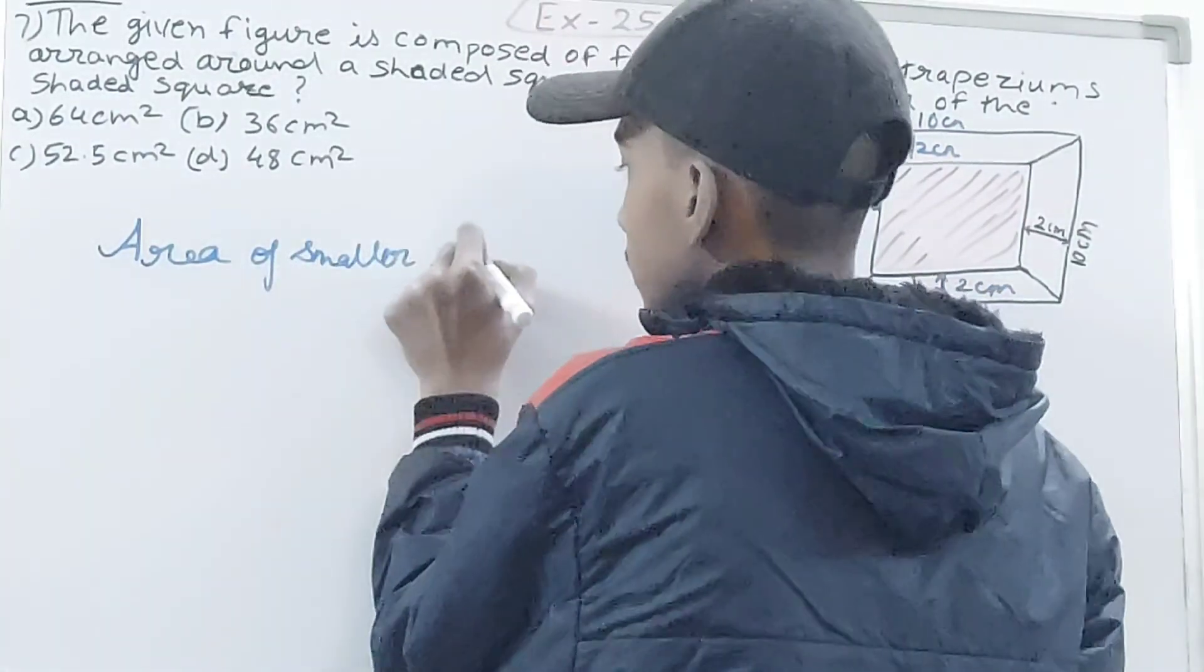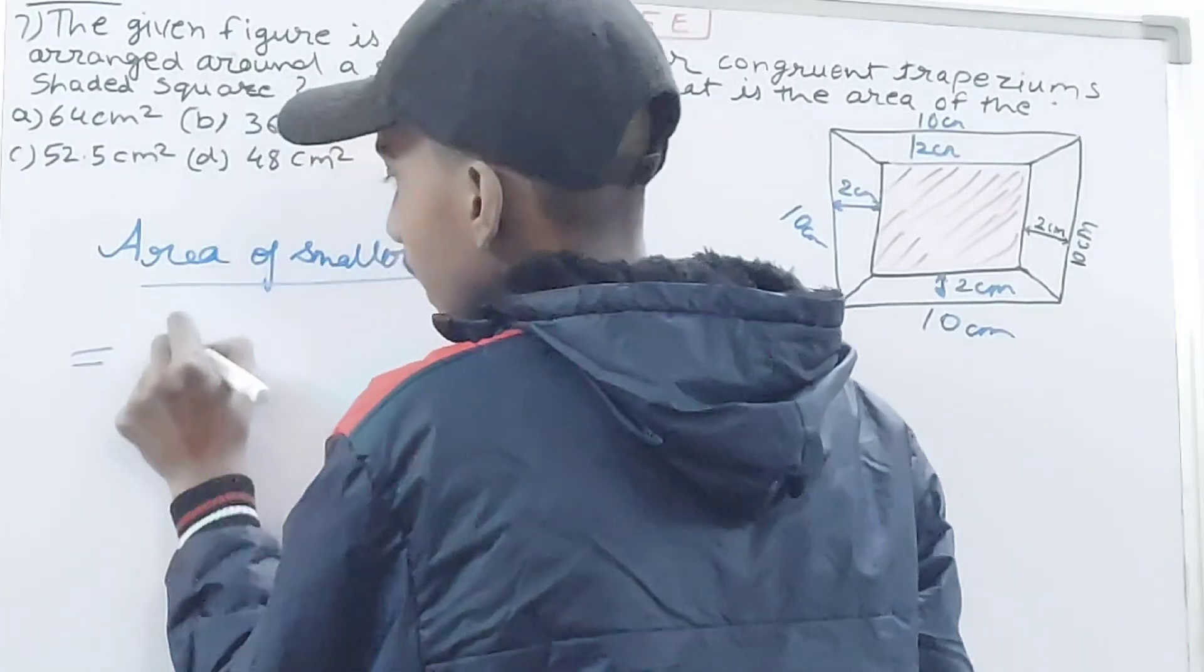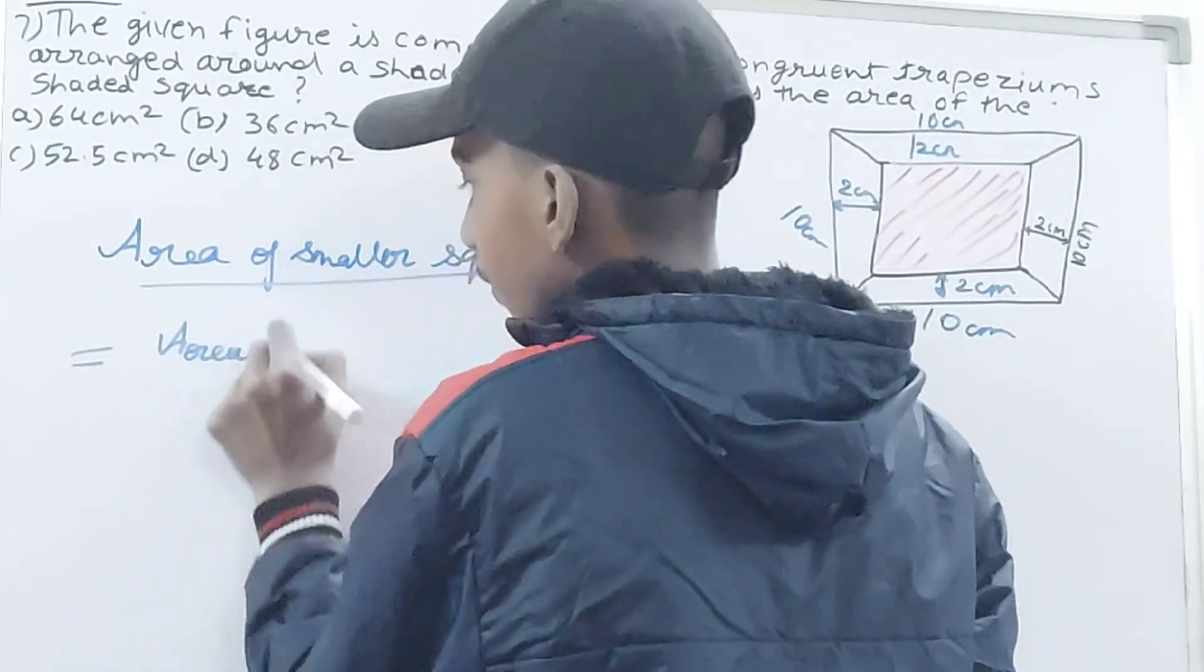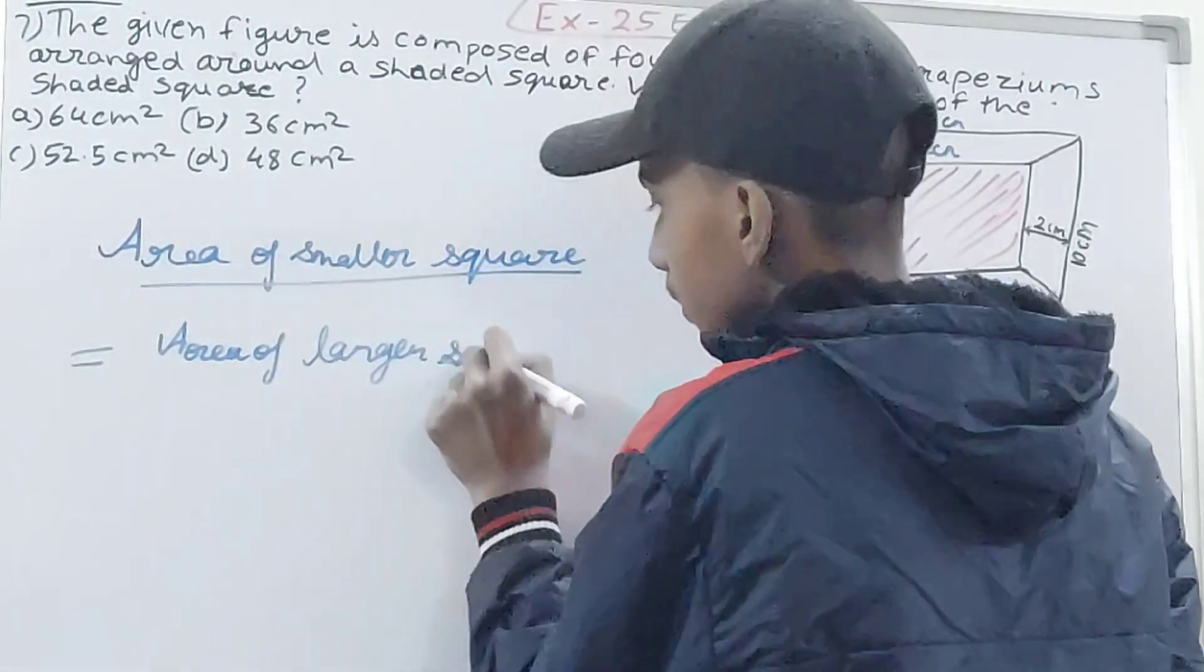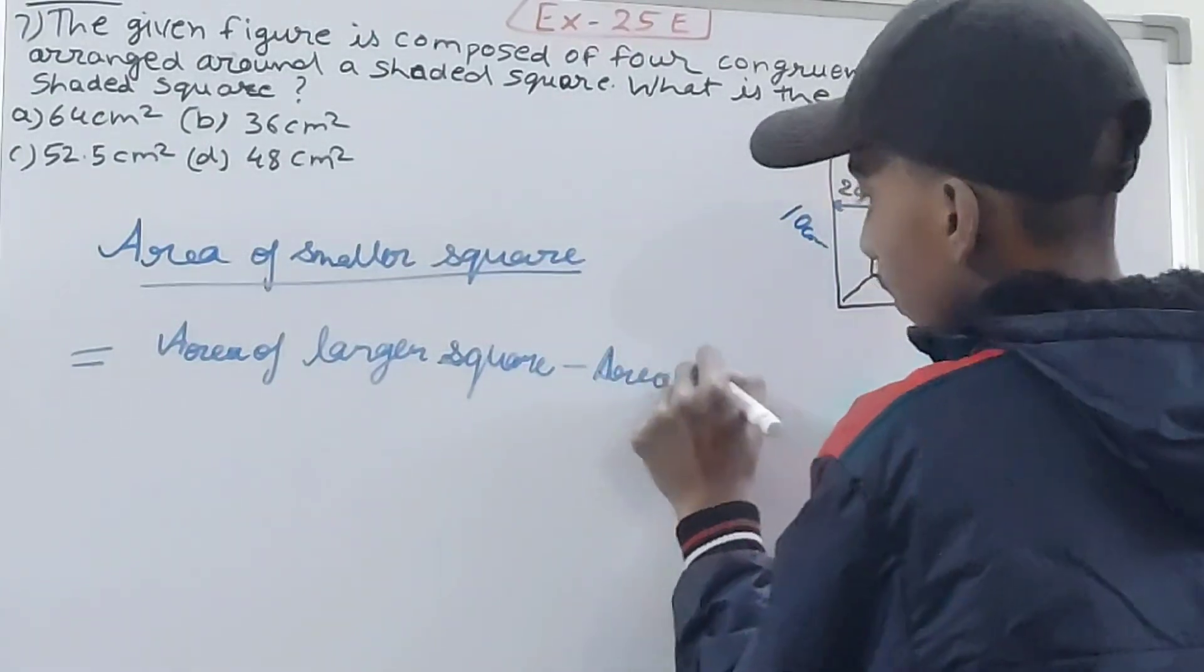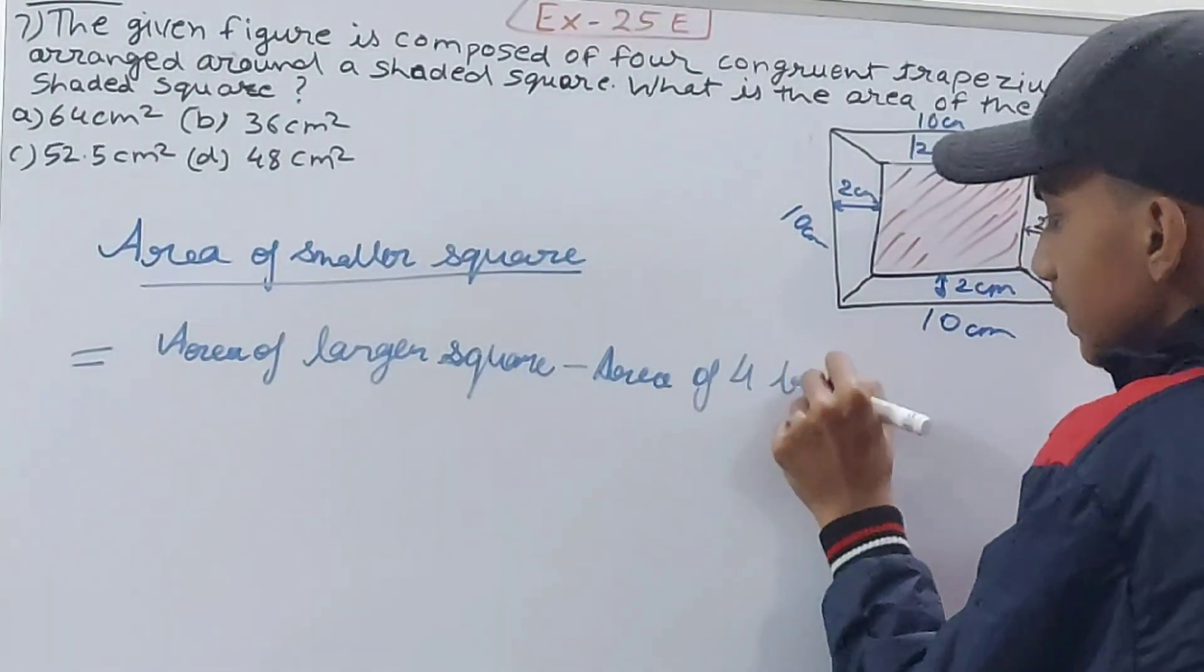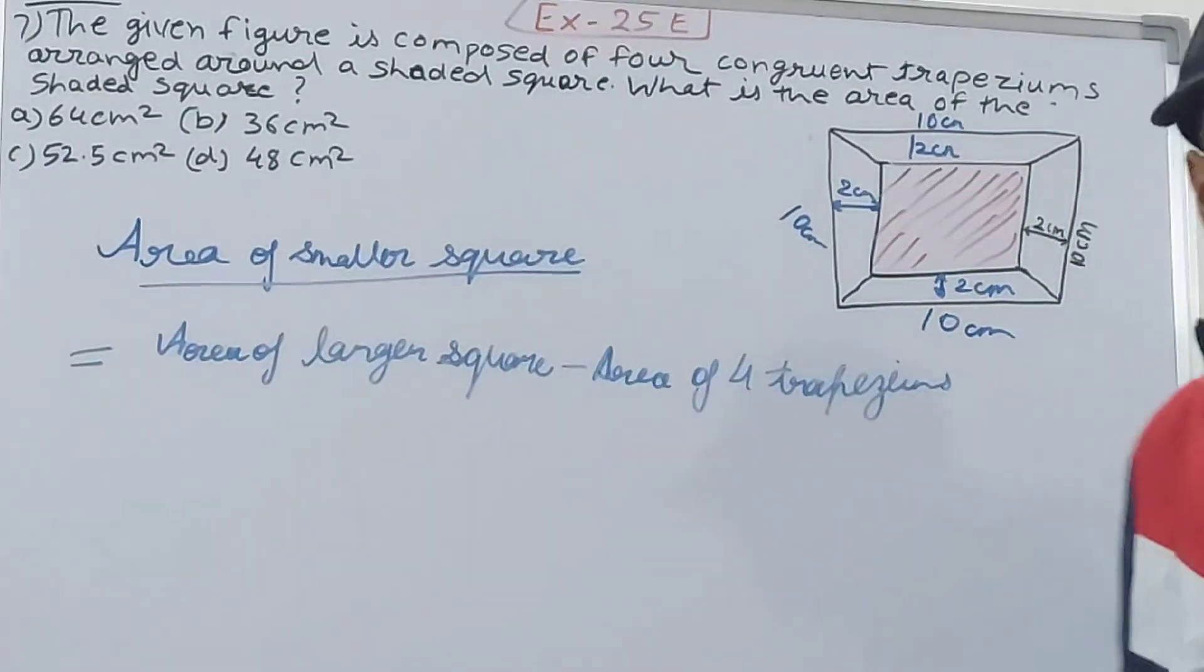So what I will do, first of all, the area of smaller square will be area of larger square minus the area of four trapeziums.